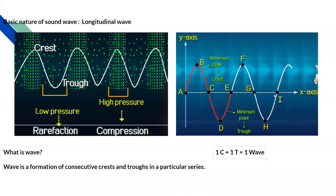If we look at this graph, we see two waves. Looking at a wave from A to E, we see a wave form with a crest and a trough. If we combine one crest and one trough, it forms one wave — that is one wave cycle. So the definition of a wave is: a formation of consecutive crests and troughs in a particular series. One crest and one trough together make one wave.